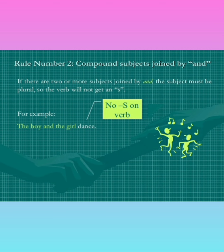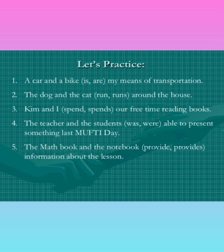Compound subjects joined by 'and' require a plural verb. If there are two or more subjects joined by 'and,' the subject must be plural, so the verb won't get an S. 'The boy and girl — dance.' No S on the verb. You have to remember: if the compound subjects, or two or more compounds, are joined by 'and,' they require a plural verb. Like 'the boy and the girl dance.' Now let's practice.